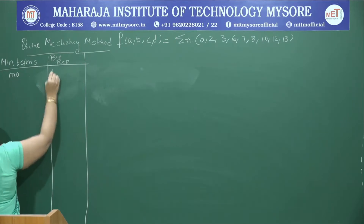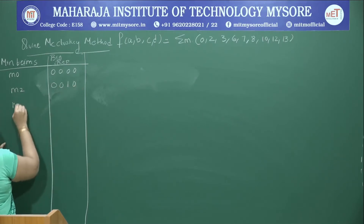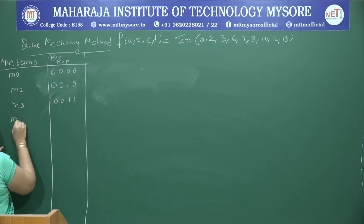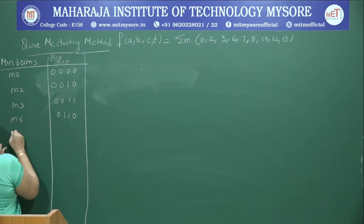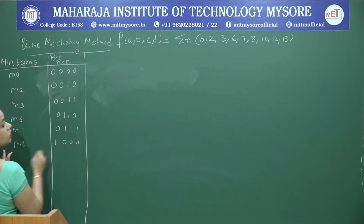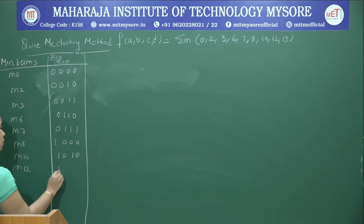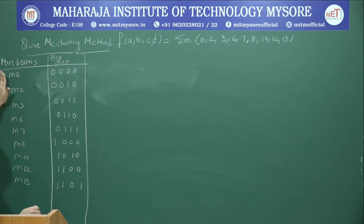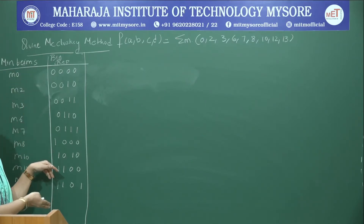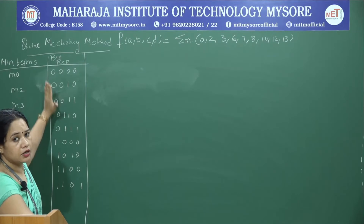In the first step, we take all the minterms and their binary representations. We have M0 = 0000, M2 = 0010, M3 = 0011, M6 = 0110, M7 = 0111, M8 = 1000, M10 = 1010, M12 = 1100, and M13 = 1101. After writing all minterms and their binary representations, we sort them in ascending order of the number of 1s in their binary representations and group them accordingly.